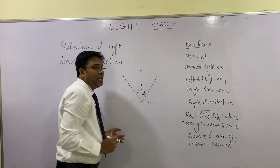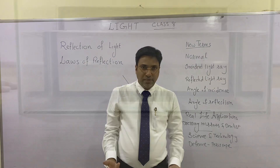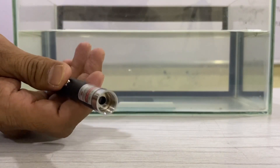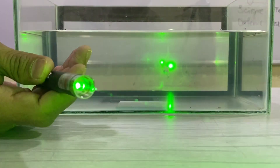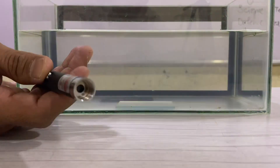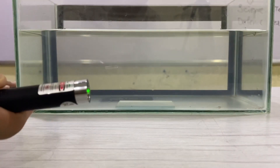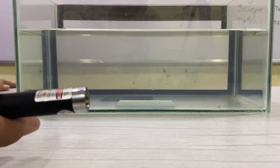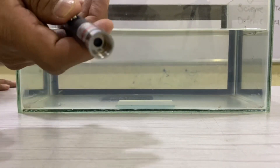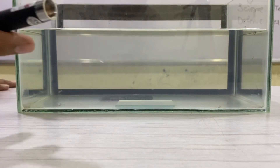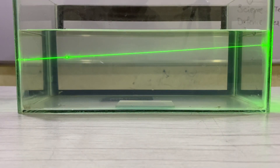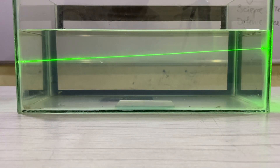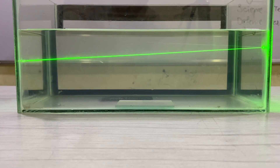We will now verify that the angle of incidence equals the angle of reflection with a small activity using a laser light. With a laser you can normally only see a spot, but here in this setup you can see the complete light ray because the light is getting reflected from the water molecules in the tank.